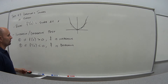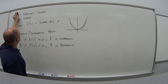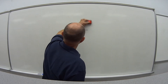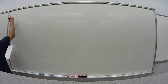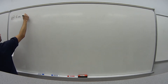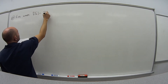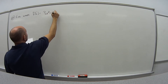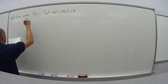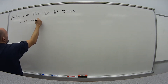Let's look at an example of how we can use this information. We want to find where the function f of x equals 3x to the 4th minus 4x to the 3rd minus 12x squared plus 5 is increasing and where it is decreasing.